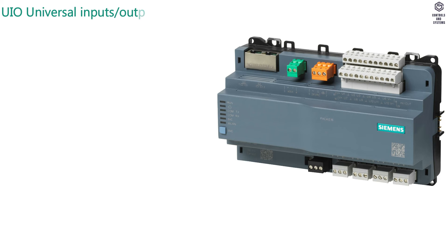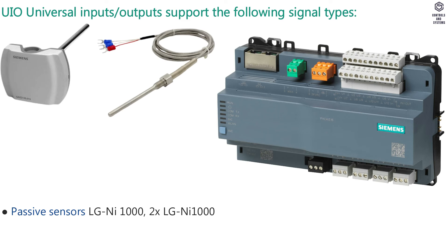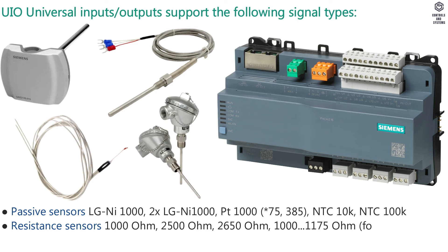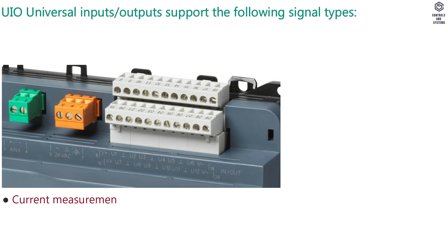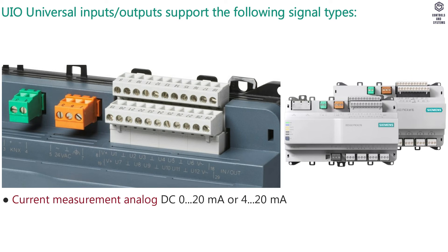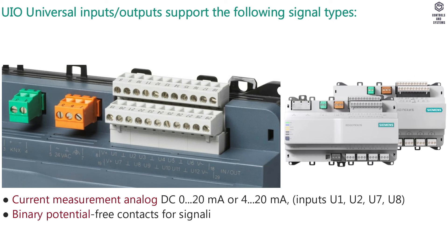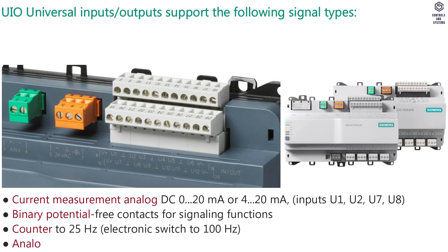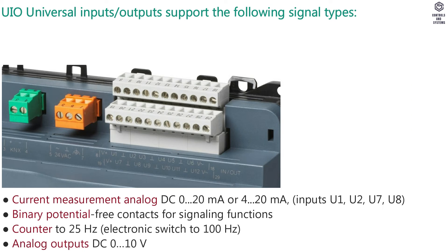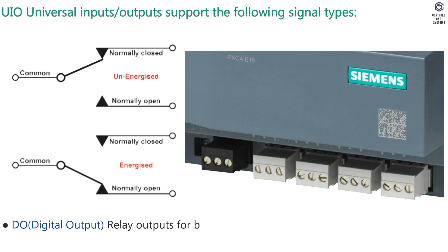UIO Universal Inputs/Outputs support the following signal types: Passive Sensor, Resistance Sensor, Active Sensor DC 0 to 10 Volt, Current Measurement Analog DC 0 to 20 mA or 4 to 20 mA, Binary Potential-Free Contacts for Signaling Functions, Counter to 25 Hz. Analog Outputs: DC 0 to 10 Volt. Digital Output: Relay Outputs for Binary Controls, Change Over Contact.